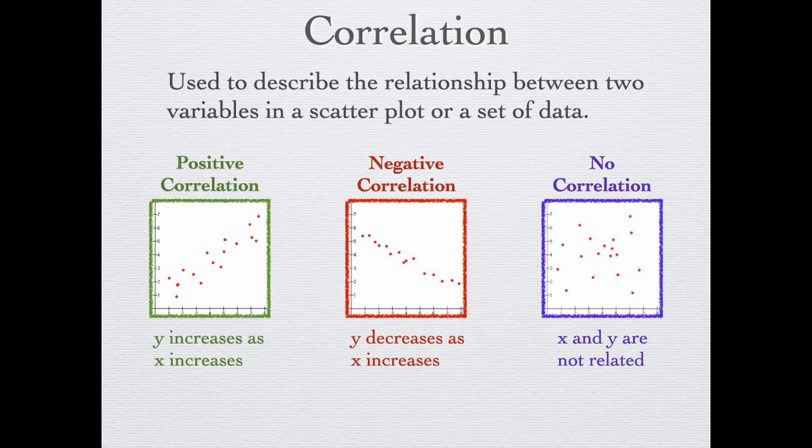If you look at the one on the left, your positive correlation — y increases as your x increases. If you were to draw a line, you would have a positive slope. For the one in the middle, y decreases as x increases. This is a negative correlation, and if you draw a line, you would have a negative slope. The one on the right has no correlation because x and y are not related, and we cannot draw a line that would represent the data very well because they're scattered all over the place.